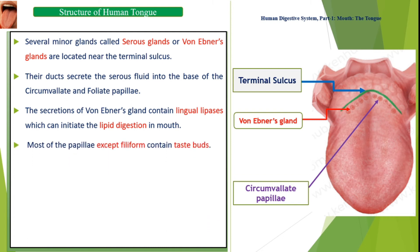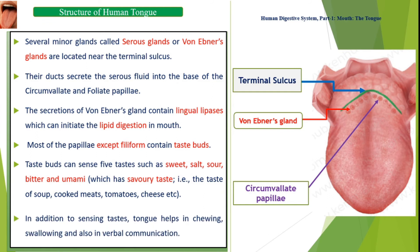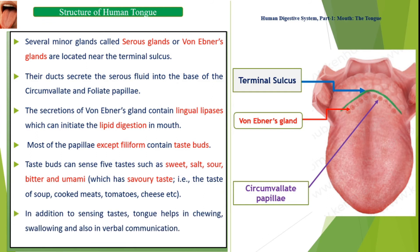Most papillae, except filiform, contain taste buds. Taste buds can sense five tastes: sweet, salt, sour, bitter, and umami. Umami has a savory taste — the taste of soup, cooked meats, tomatoes, cheese, etc. In addition to sensing taste, the tongue also helps in chewing, swallowing, and verbal communication.